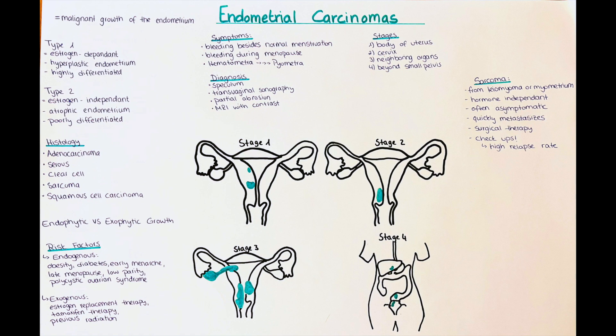The second group is the estrogen-independent type, also called type 2. This cancer develops from atrophic endometrial tissue. It is a poorly differentiated type, so generally with a worse prognosis. This type makes up around 10 to 15 percent of endometrial carcinomas, while the first group makes up around 75 to 80 percent.